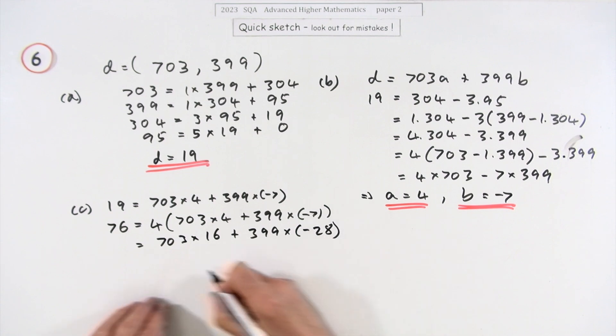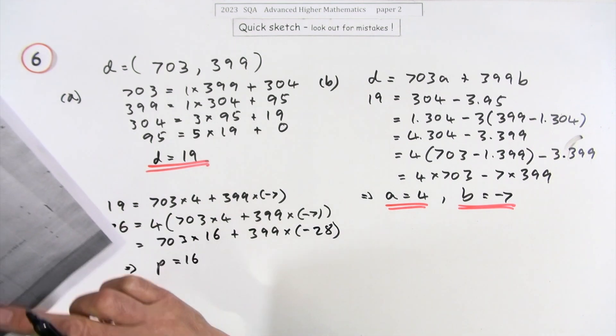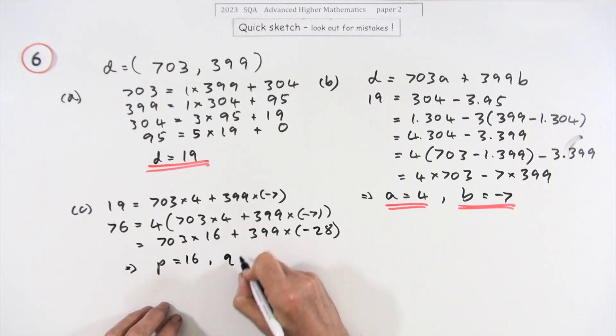So specifically, because I can only multiply one of them, that'll be 703 multiplied by 16 and 399 multiplied by negative 28. So here then, that means that the p must be 16, the right way around p for the 703, and the q must be negative 28.